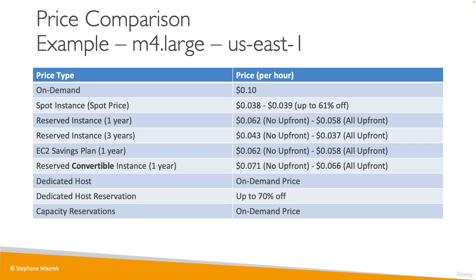In terms of price comparison, I've put together a table with one example at one point in time. Taking an M4 large in US East 1, the on-demand price is 10 cents. The spot price can be up to 61% off. For reserved instances, you have different pricing for one year vs. three years and no upfront vs. all upfront. The EC2 savings plan has the same discounts as reserved instances. There are also convertible reserved instances, dedicated host at the on-demand price, dedicated host reservation at up to 70% off, and capacity reservation at the on-demand price.